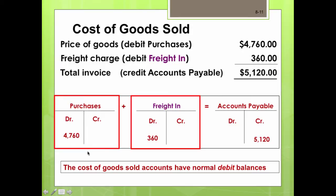For example: the price of goods is a debit to purchases for $4,760; the freight charge is a debit to freight in for $360; and the total invoice is credited to accounts payable for $5,120. In the T-accounts, purchases is debited $4,760, freight in is debited $360, and accounts payable is credited $5,120 for the total invoice. Remember that cost of goods sold accounts have normal debit balances.